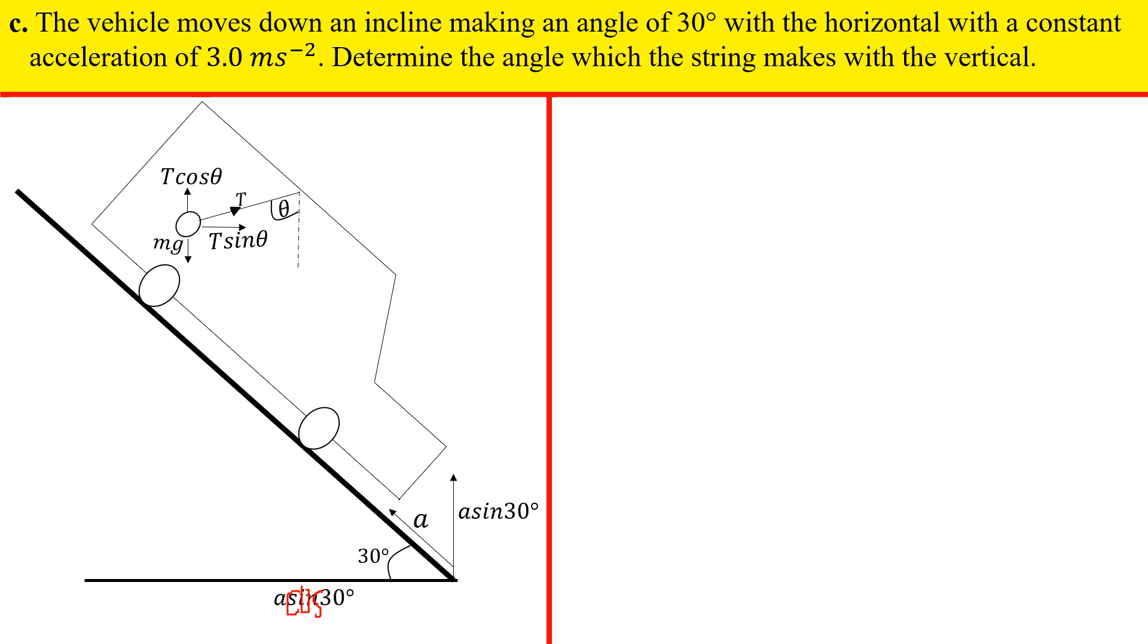The tension in the string we can resolve vertically and horizontally. We have T sin θ here and T cos θ there, and the weight is acting downwards. But the real key things here are what is happening with the acceleration. Let's resolve in the vertical and horizontal direction. T sin θ is pointing horizontally and will equal the horizontal resulting force on this bob. What is the horizontal resulting acceleration on the bob? It's a cos 30, so multiply that with the mass, you get the horizontal resulting force: T sin θ equals ma cos 30.